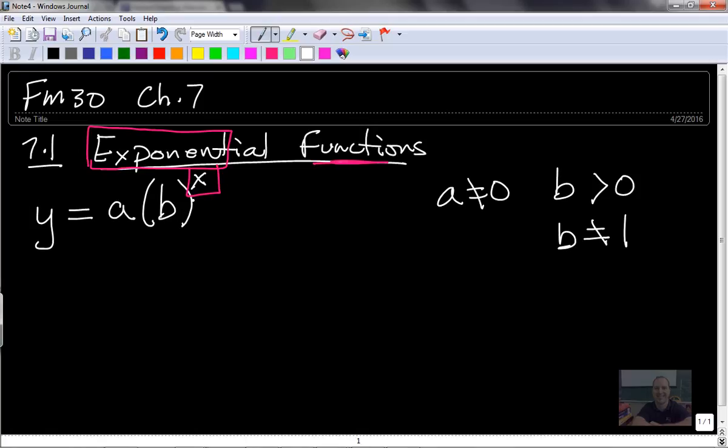Because if you have one to some power, it doesn't matter how many times you multiply one by itself, you'll always just get one. So if B was one, we would end up having a horizontal line at whatever A was. So these are just kind of to the side. We won't really run into this too much, but there are some restrictions to what we're studying here.